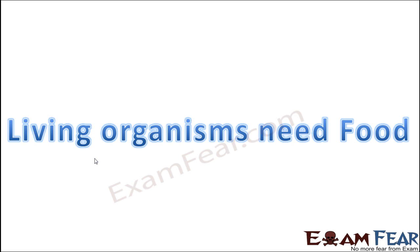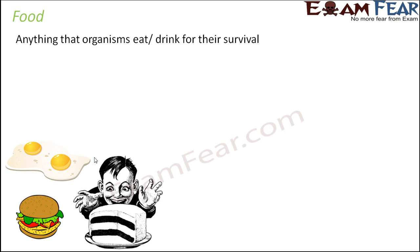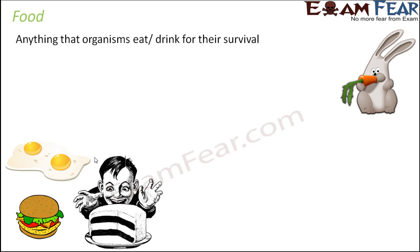The first thing we discussed is that living organisms need food. Food is anything that an organism eats or drinks for survival. When we think of our food, it could be a burger, a cake, an omelette, fruits, or vegetables — there are a lot of varieties. Like us, different organisms have different food habits; some eat plants, some eat other animals, some eat fruit or vegetables.